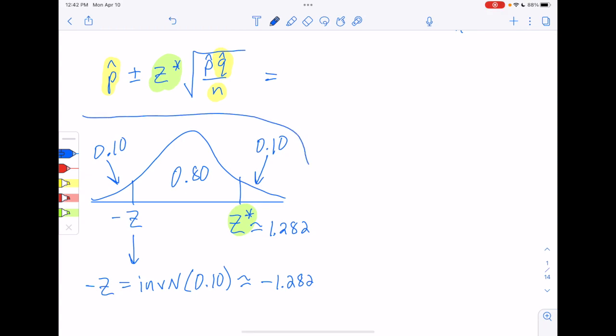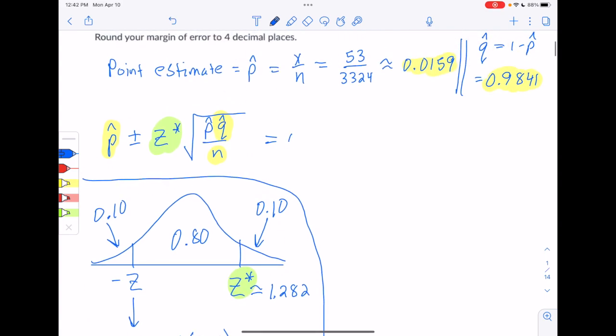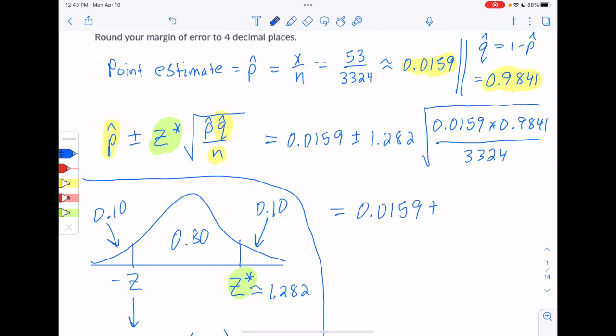So this was all just scratch work, and now let's head up here and start filling in the pieces. P-hat was 0.0159, and then plus or minus the z-score we just found, 1.282, times the square root of p-hat, 0.0159, times q-hat, 0.9841, divided by our sample size, which is 3324. So that's going to be 0.0159 plus or minus some amount. Let's go see what that amount is on the calculator.